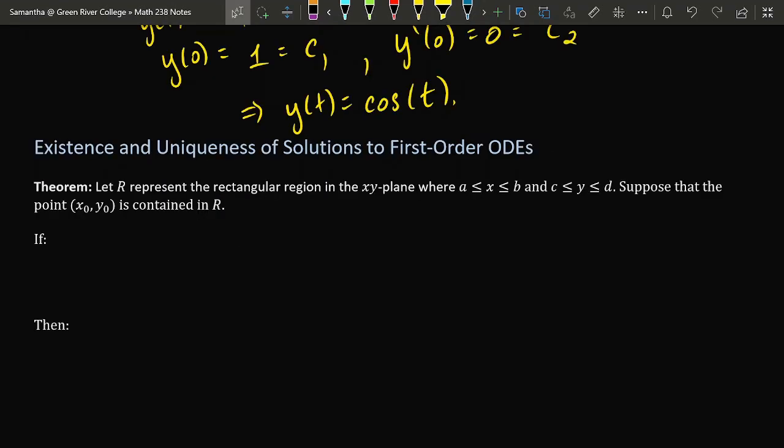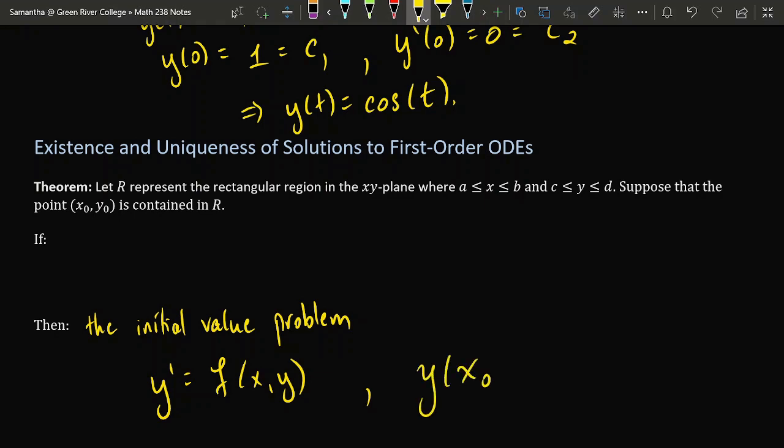Now suppose that we're dealing with a first-order differential equation, the thing that we introduced all the way back in the first half of the course. And suppose we're considering the initial value problem, where y' is equal to some function, some expression containing x's and y's, and we require that when we plug x₀ into y, that this coordinate called y₀ is the result.